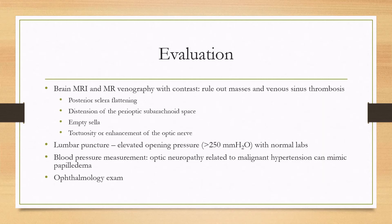In terms of diagnostic workup, for anyone with papilledema you'll want to get head imaging, starting with a brain MRI and MR venography with contrast. The MRI can help rule out masses, which can cause intracranial hypertension, and the MRV can help diagnose a venous sinus thrombosis. If there is no mass or venous sinus thrombosis, MRI findings that can help pinpoint the diagnosis of IIH include posterior scleral flattening, distention of the perioptic subarachnoid space, an empty sella, and tortuosity or enhancement of the optic nerve.